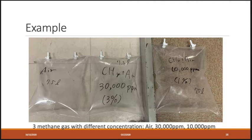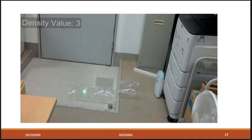In the example, we use three different concentration values of methane gas. From left to right is air, 30,000 ppm concentration, and 10,000 ppm concentration.